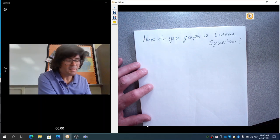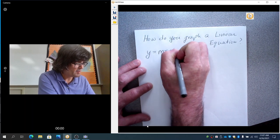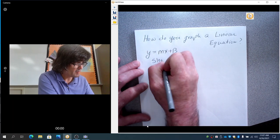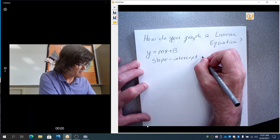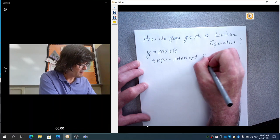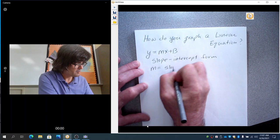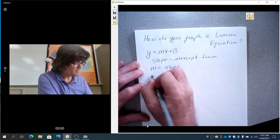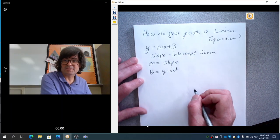A linear equation has a couple of different forms, and the most common is slope-intercept form. This is called slope-intercept form. It's called that because it has the slope right here. M is the slope, and B is the y-intercept. That is where it crosses the y-axis.